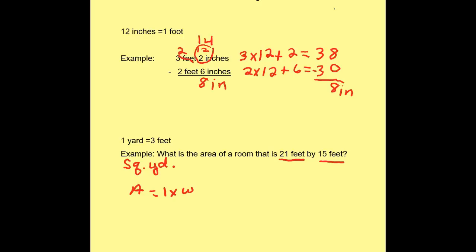Okay, so I have 21, and since I know 3 feet equals 1 yard, I'm going to divide both numbers by 3. So 21 divided by 3 is 7 yards, and 15 divided by 3 is 5 yards. So now that I have it in yards, I'm just going to multiply 7 by 5, which would give me 35 square yards.